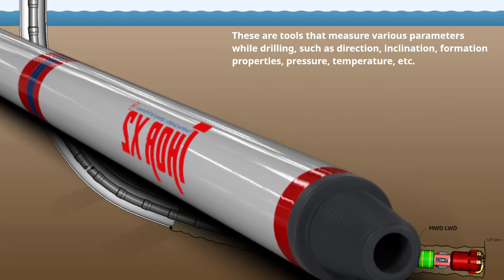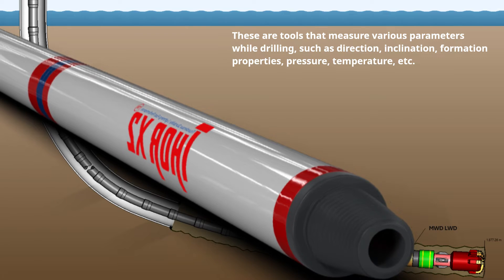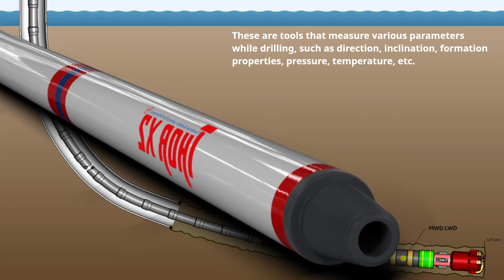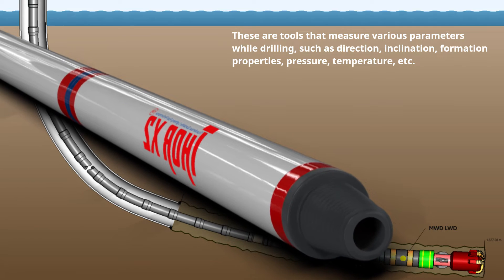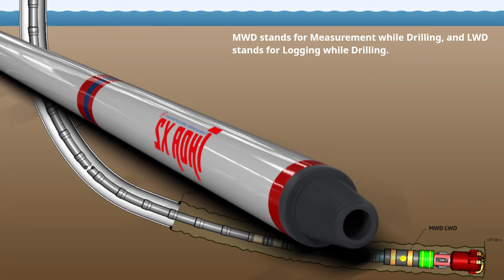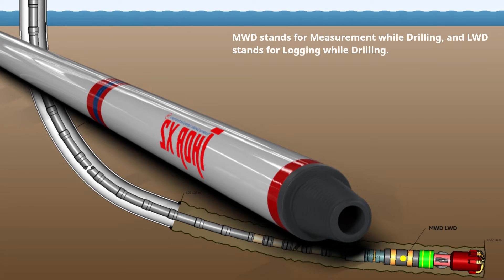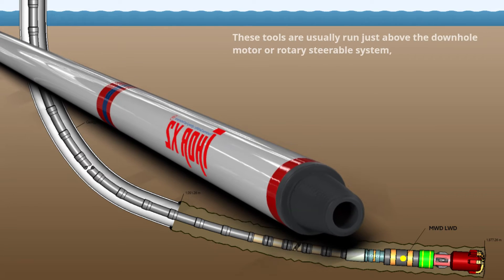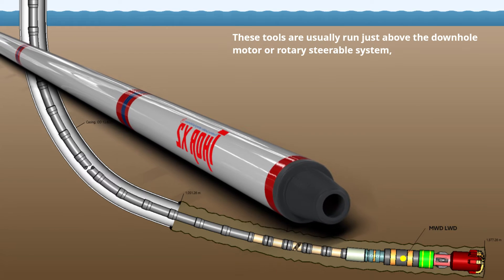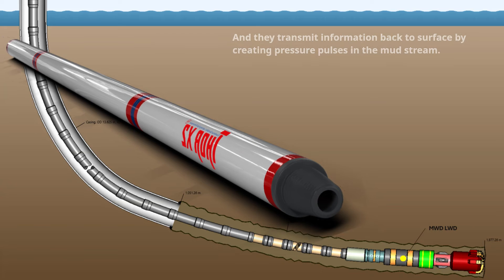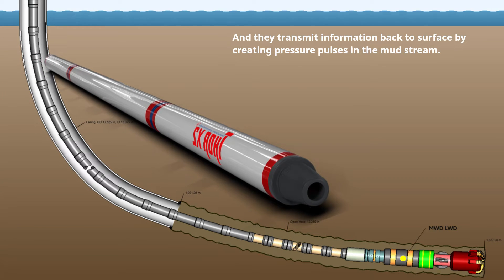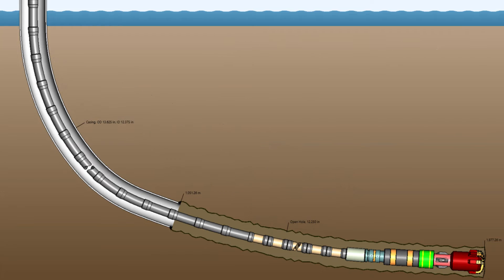MWD and LWD tools are tools that measure various parameters while drilling, such as direction, inclination, formation properties, pressure, and temperature. MWD stands for Measurement While Drilling and LWD stands for Logging While Drilling. These tools are usually run just above the downhole motor or rotary steerable system, and they transmit information back to surface by creating pressure pulses in the mud stream.